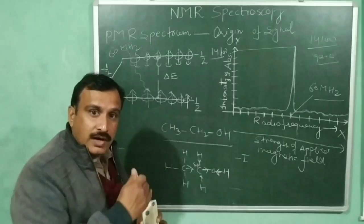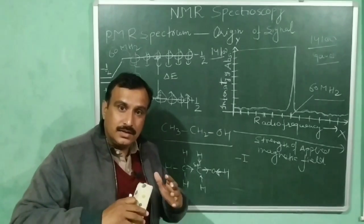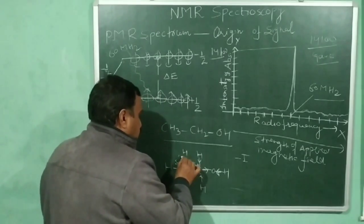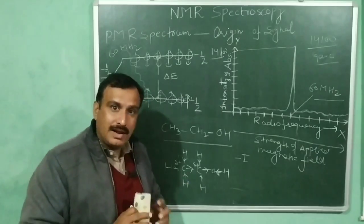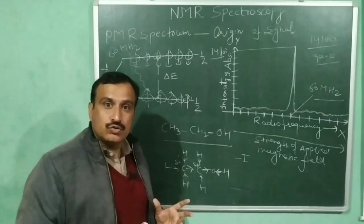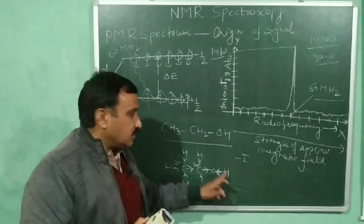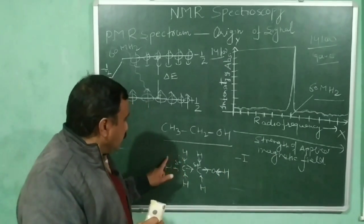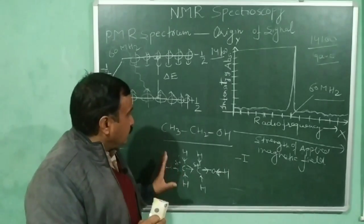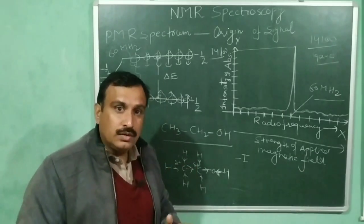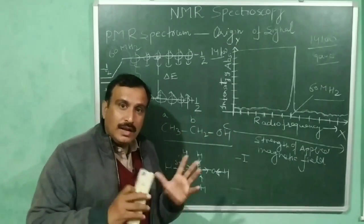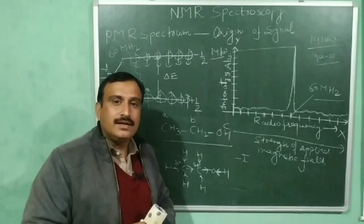This inductive effect extends further along the carbon chain, but its effect becomes progressively less. So the CH₃ protons will have the most electron density compared to the CH₂ protons and the hydroxyl proton. The two CH₂ protons are equivalent as they have the same electron density, and the three CH₃ protons are also equivalent. So we have three types of protons in ethanol — let us call them A, B, and C — and they will have different electron densities, meaning they are in different chemical environments.